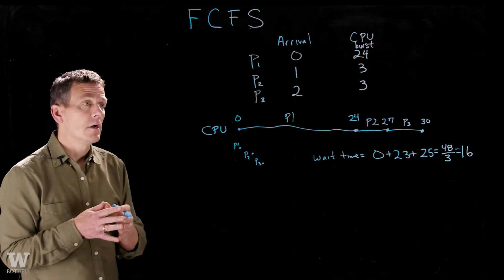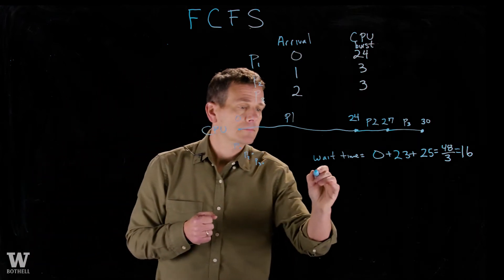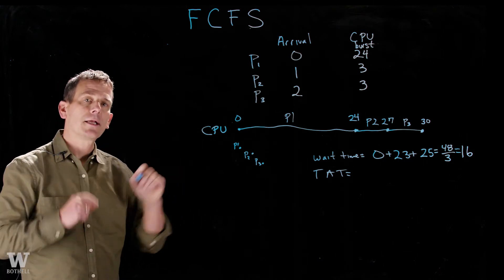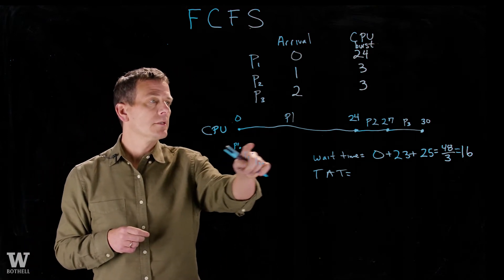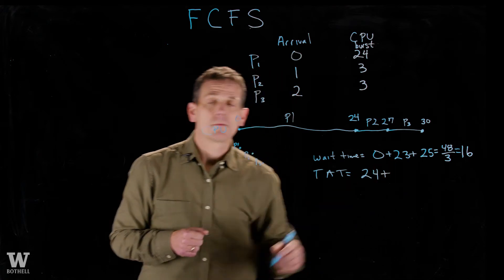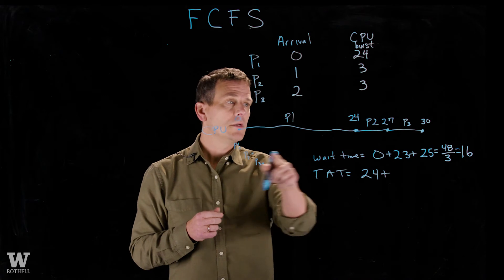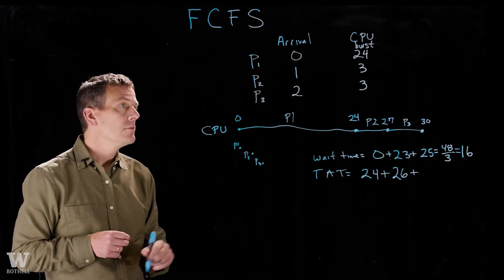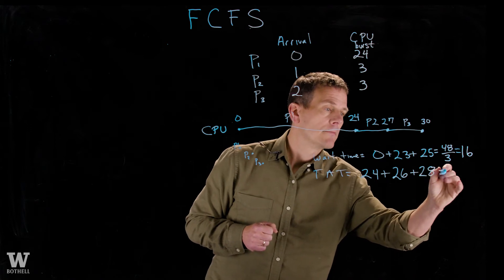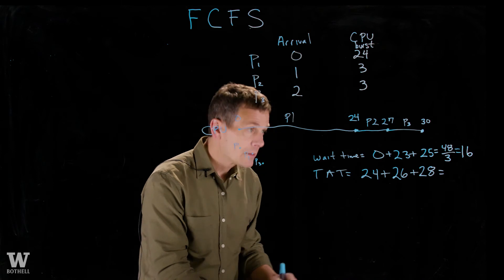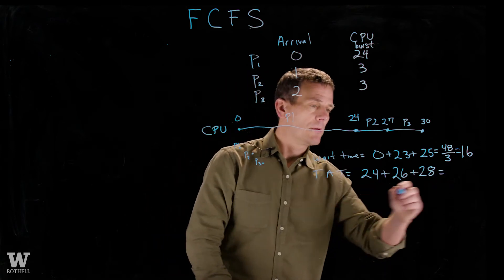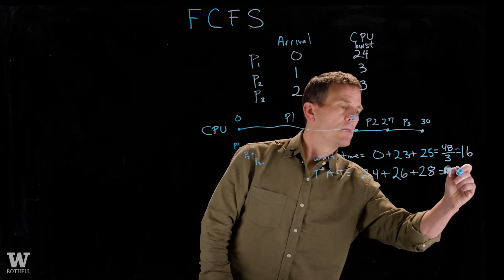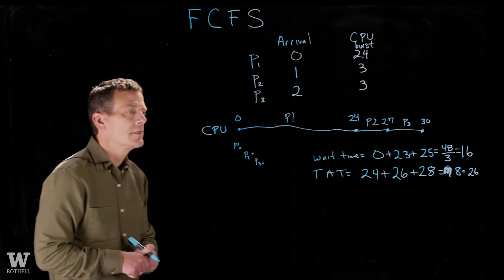Another metric that we can use to evaluate our scheduler is turnaround time. Turnaround time is the amount of time it takes when the process enters the system to when it exits the system. In this case, P1 started at zero, finished at 24, so its turnaround time was 24 time units. P2 entered at 1, exited at 27. Its turnaround time was 26. And then finally, P3 entered at time 2, exited at 30, with a turnaround time of 28. If we add 26, it looks like 78. Divide that by 3, we get 26. So average turnaround time here is 26.